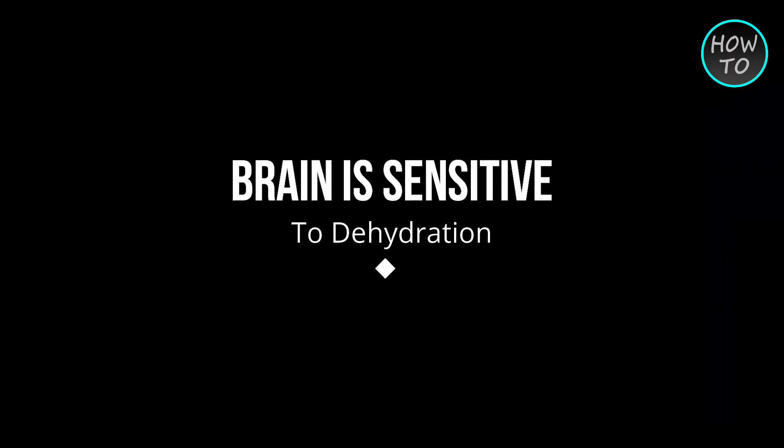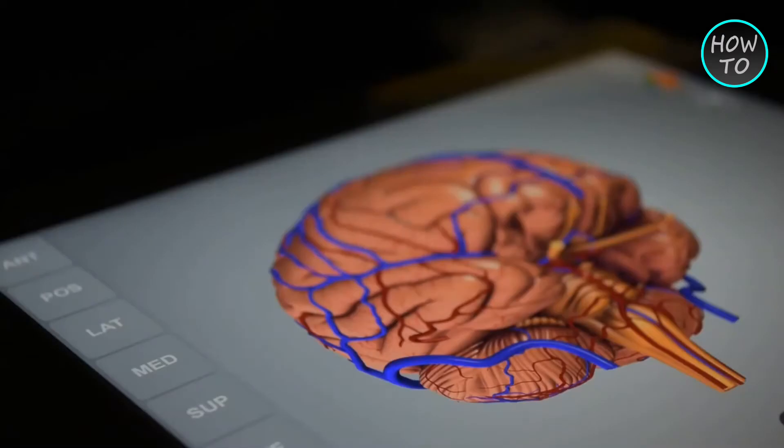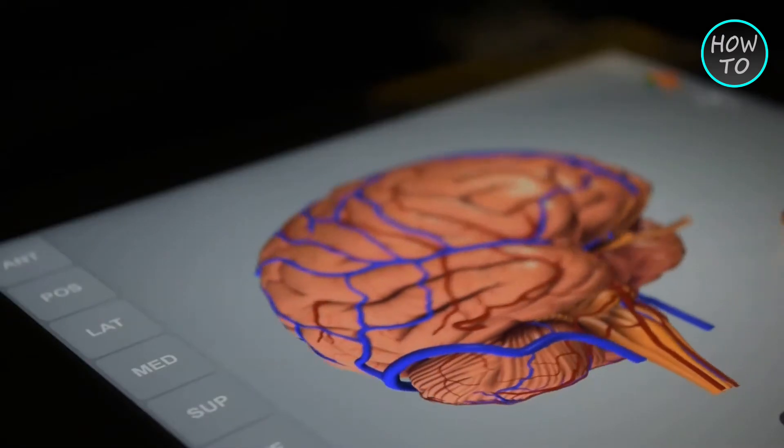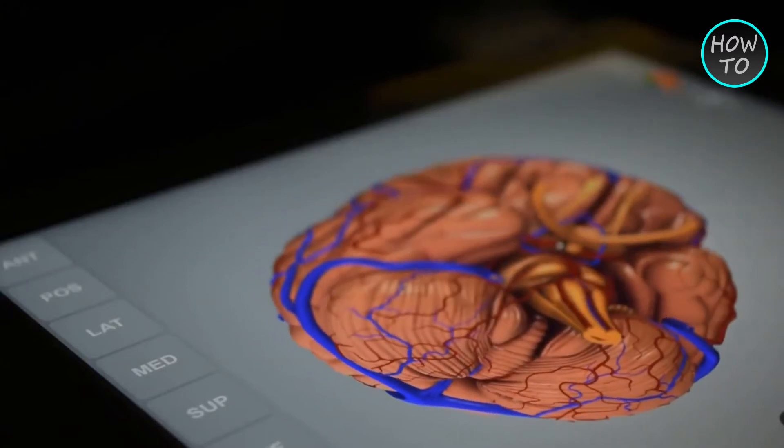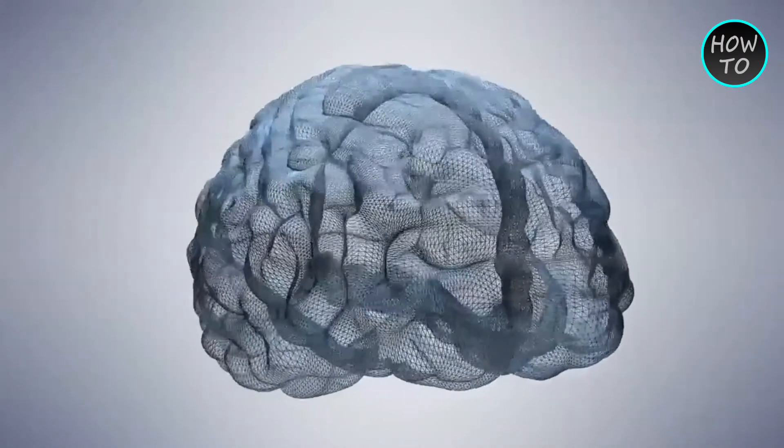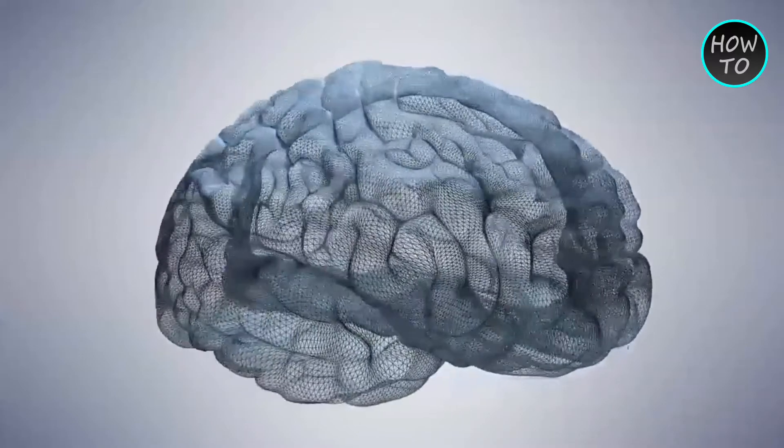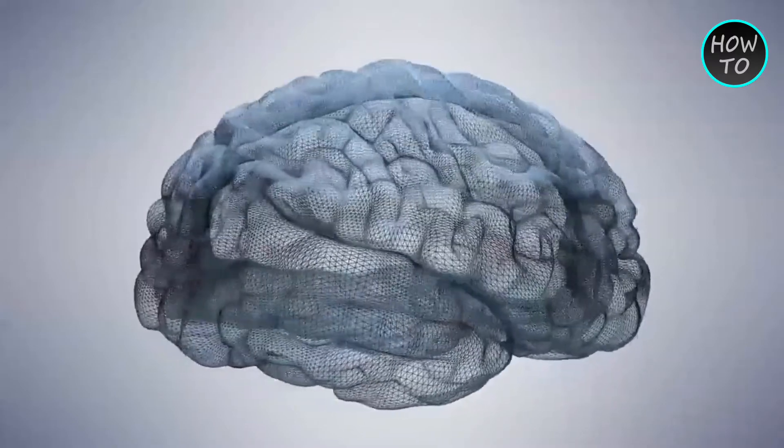Number four: brain is sensitive to dehydration. Our brain is about 80 percent water. Even a slight loss of fluid can reduce concentration and vigilance and lead to deterioration of short-term memory and other cognitive abilities. If water level is too low, our brain cells cannot function properly.